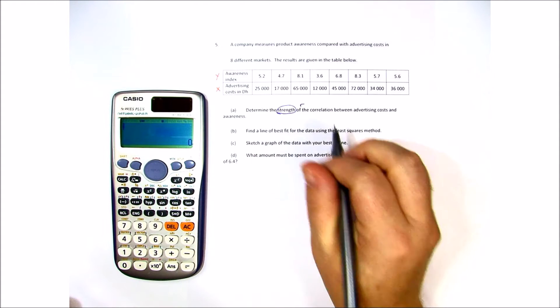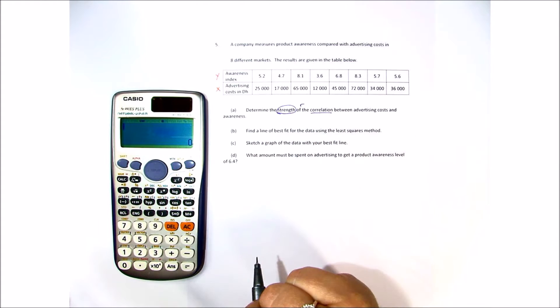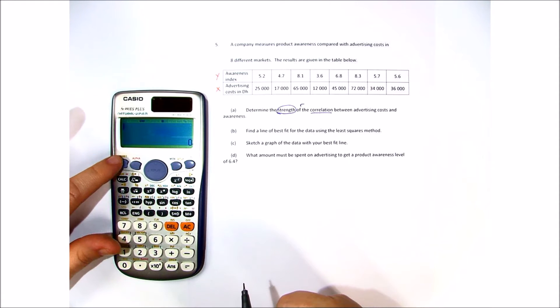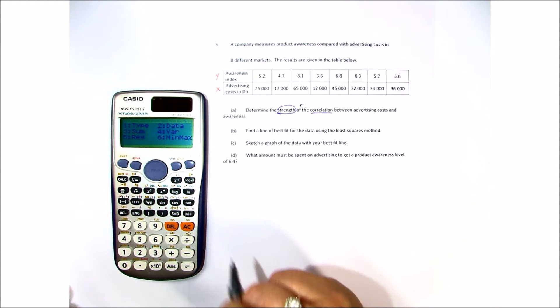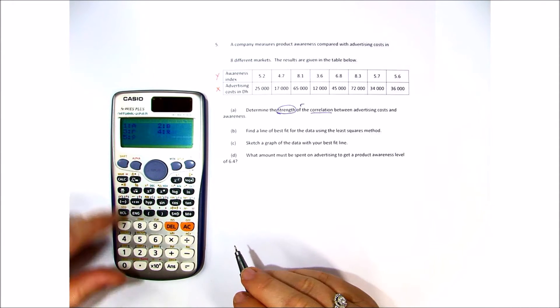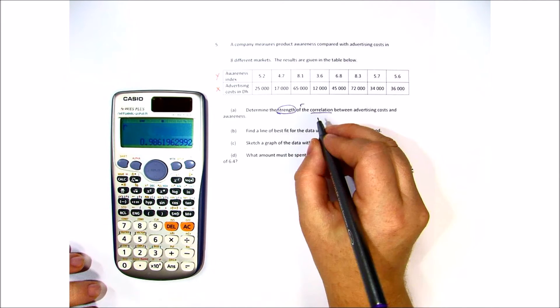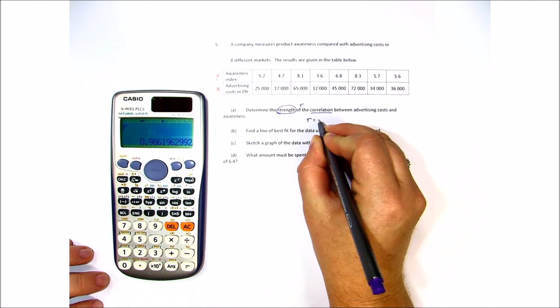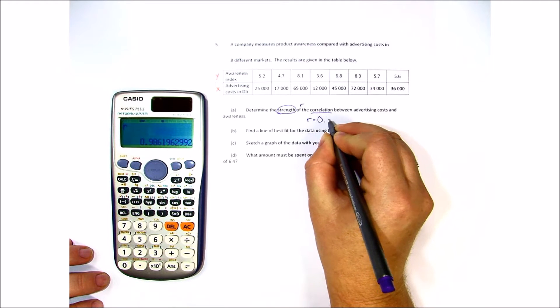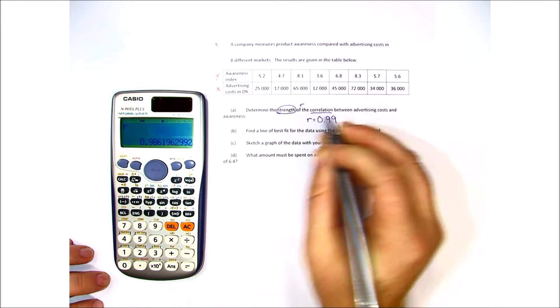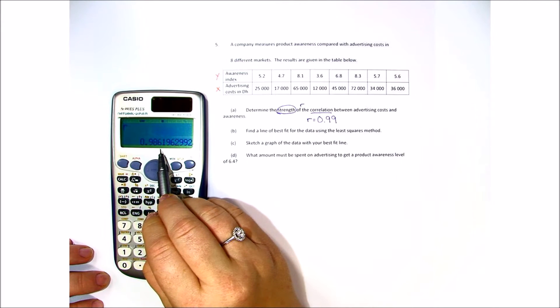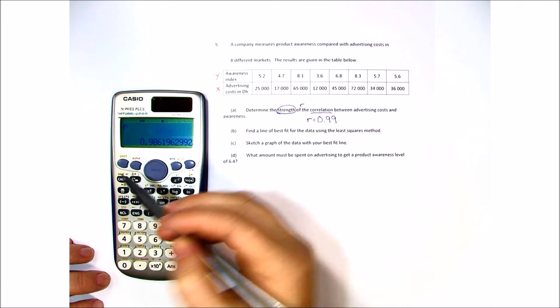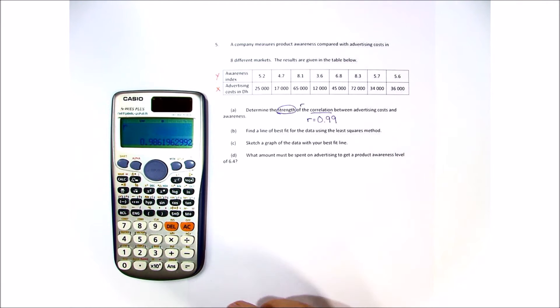Now we need to determine the strength of the correlation between advertising costs and awareness. So we do shift 1, and we're going to go into 5 regression and look at R. And I find that we have a very high correlation at R equals 0.99. Now we don't put 0.98 because the 6 makes the 8 round up.